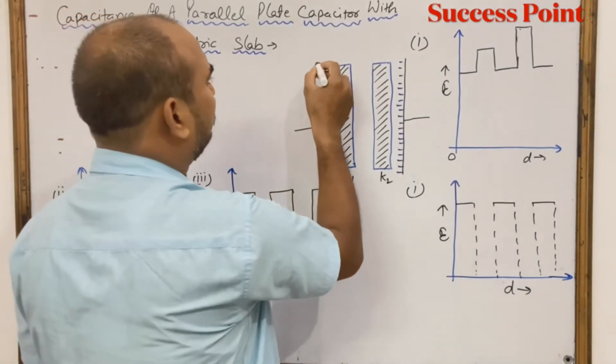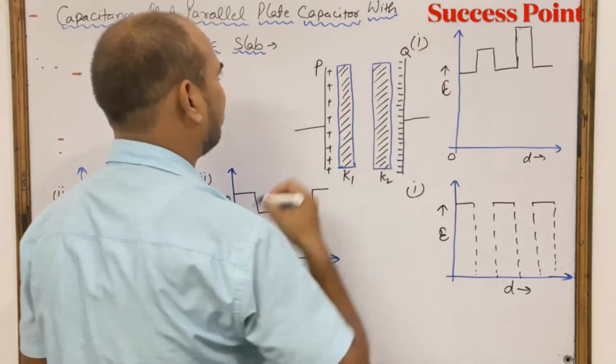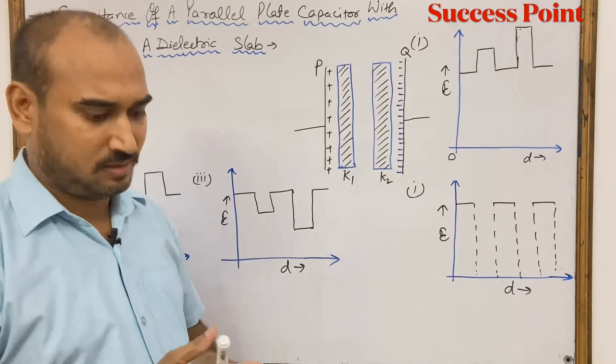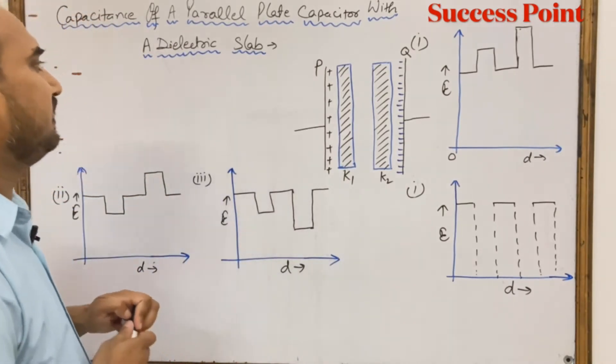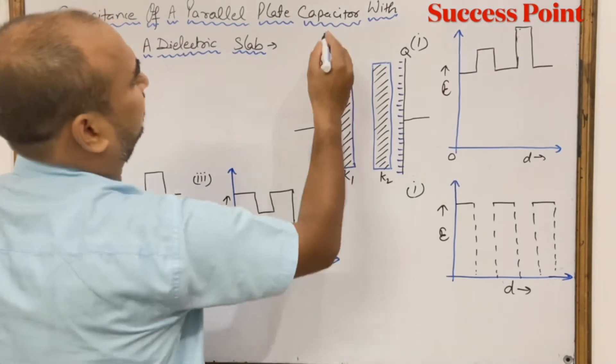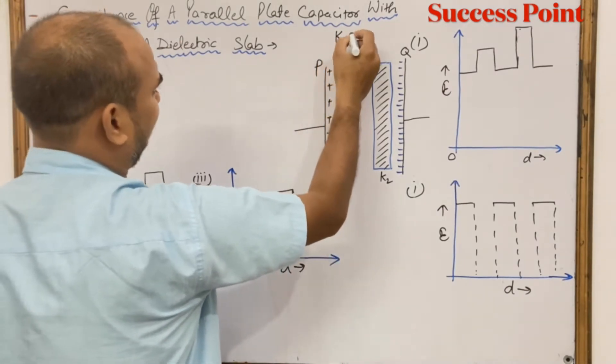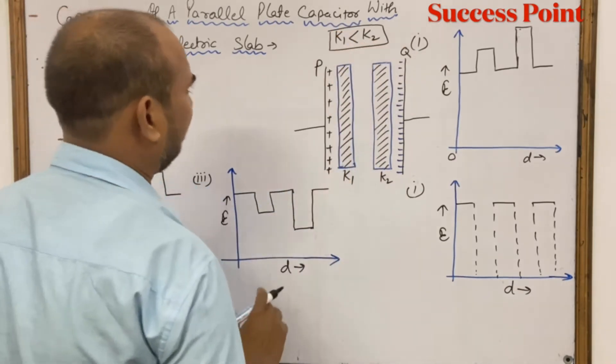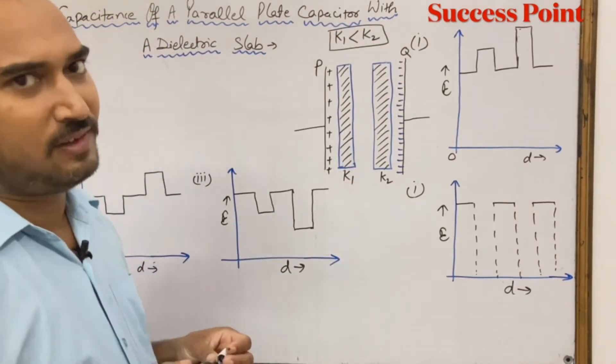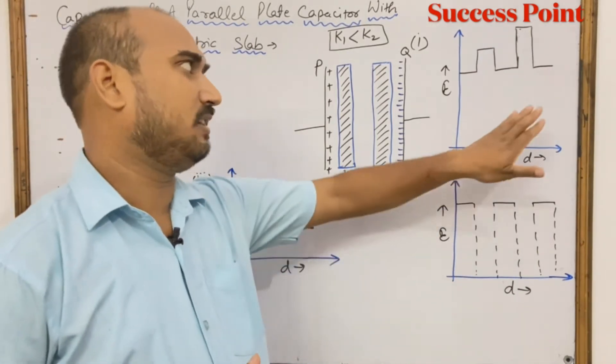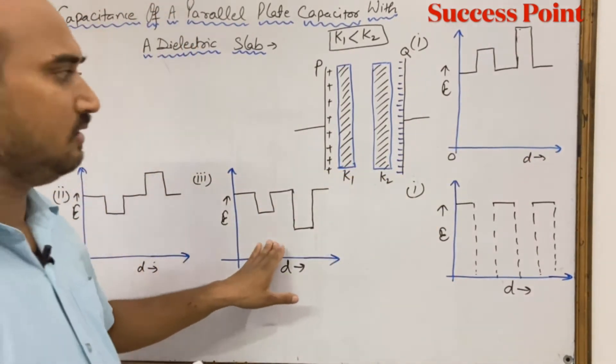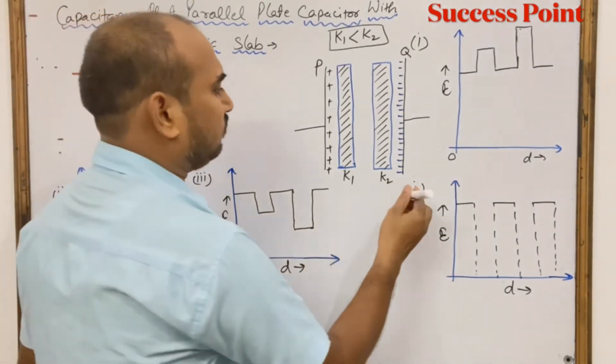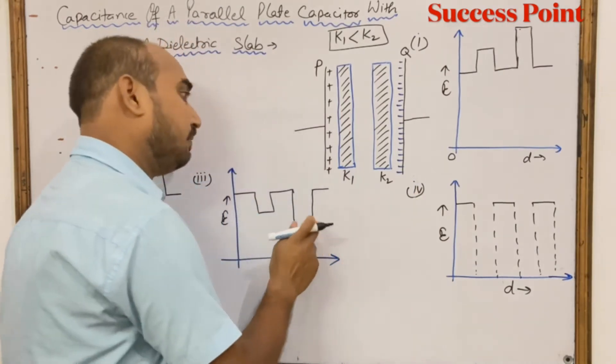The key of the question is that one plate is P, one plate is Q, and there are two dielectric slabs. The most important thing is that k1 is less than k2. So we are asked which electric field graph is correct: the first graph, second, third, or fourth. I will tell you that the third graph is correct, but why?